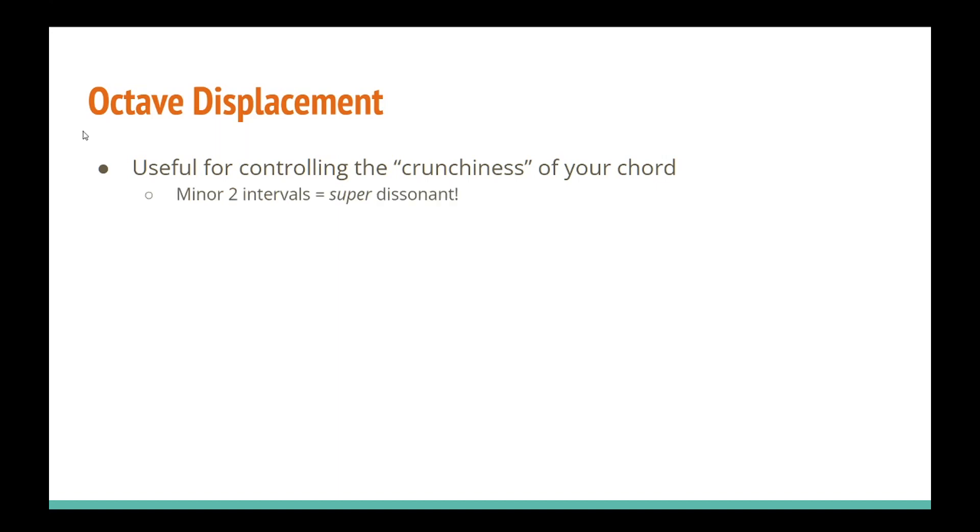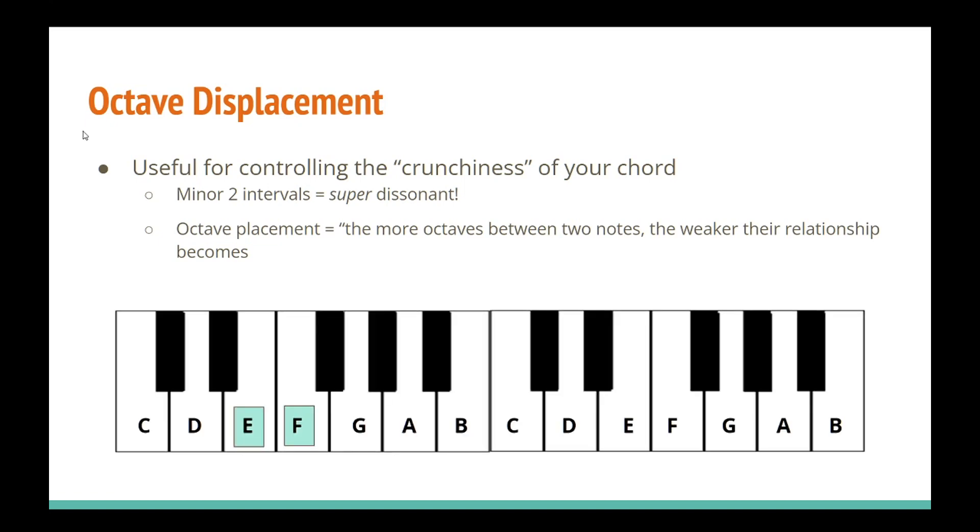In that case, it can be really helpful to know how the way you voice these chords can have a huge impact on just how crunchy and dissonant they sound. Now we talked about how minor second intervals are very dissonant. They don't blend too well together. But as a general rule, the more octaves you place between two notes, the weaker their relationship becomes. For example, this is a minor second interval.